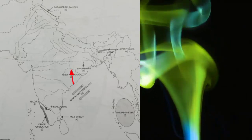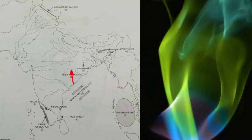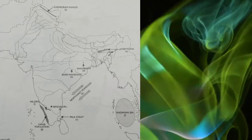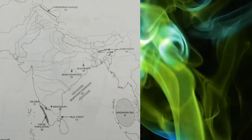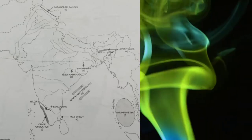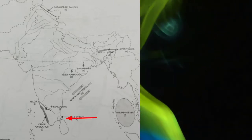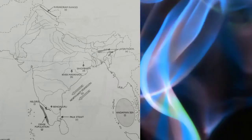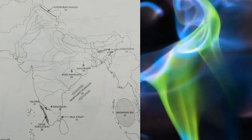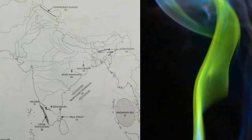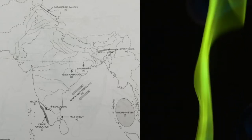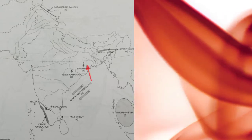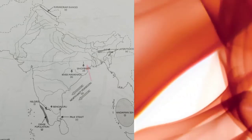Draw the river Mahanadi along this line. Next, mark and name the Palk Strait — very important, appears every time in ICSE geography map pointing. Also mark and name the iron ore region of Singhbhum.